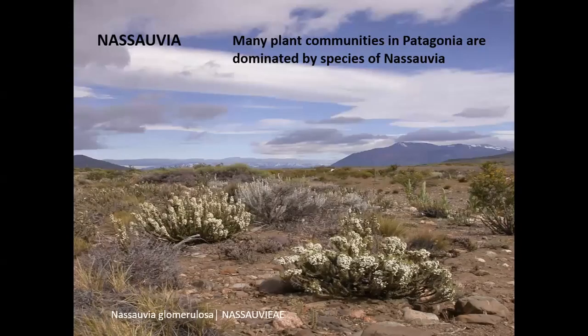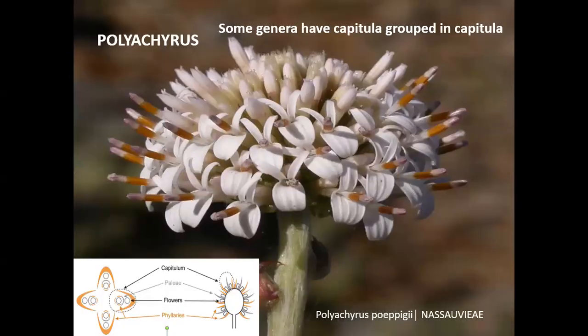To see some examples of genera and species of the Nassauvieae: many plant communities in Patagonia are dominated, for example, by species of Nassauvia — in this photograph, Nassauvia glomerulosa. Some genera of Nassauvieae have capitula grouped in capitula, called secondary capitula, secondary heads, pseudocephalia, or syncephalia. These occur, for example, in Polyachyrus and Moscharia, where each capitulum is constituted by only two florets, gathered again in a capituliform secondary inflorescence — possibly an adaptation for pollination.